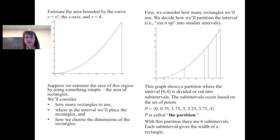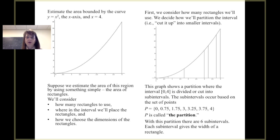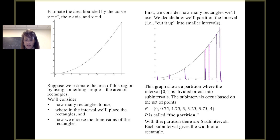Suppose I choose this partition, based on the set of points 0, 0.75, 1.75, 3, 3.25, 3.75, and 4. The first and last points of our partition are the endpoints of our interval, and that will always be the case. For this particular partition, there are six subintervals, and the length of each subinterval gives the width of the corresponding rectangle.